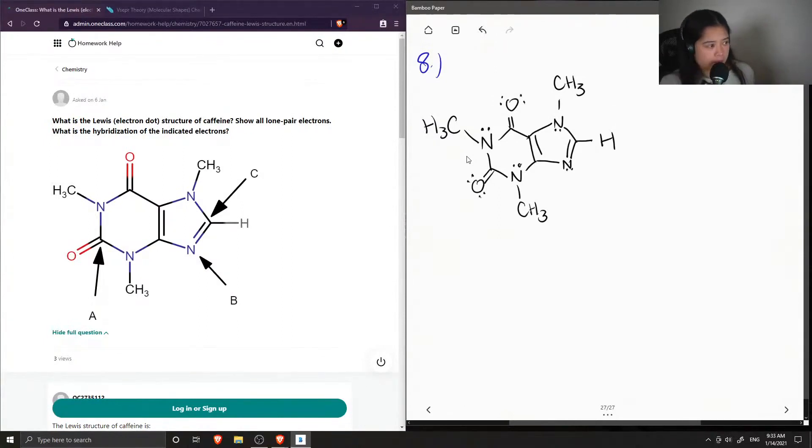Okay, so this is the Lewis dot structure of caffeine, and now we need to know the hybridization of each of the indicated atoms. So this is pointing at, I believe, the carbon right here, and we are looking at this nitrogen which is B, and then finally this carbon here which is C.